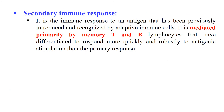Secondary Immune Response: when the same antigen previously introduced into the body is encountered again, the immune response will be very fast. That is known as secondary immune response. Memory B and T cells are involved in the secondary immune response, and it is faster than the primary immune response.